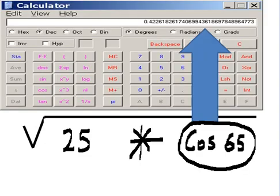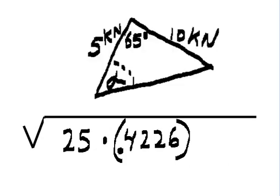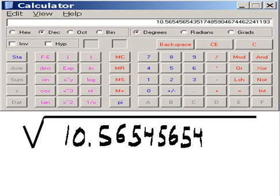Cosine 65 is 0.42261826. I get 25 times 0.4226, which gives me 10.565.